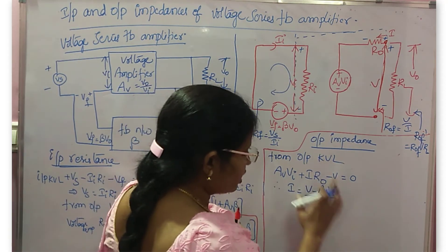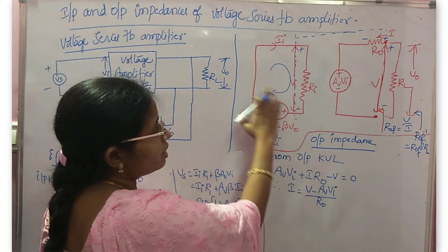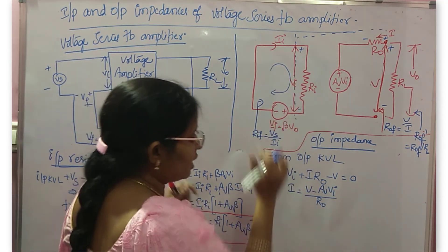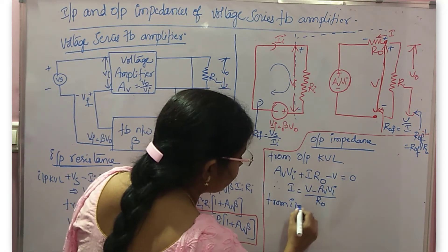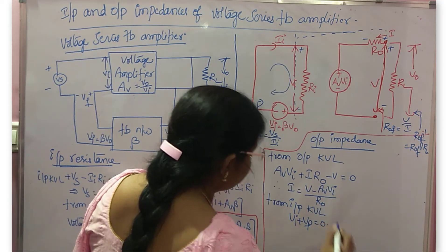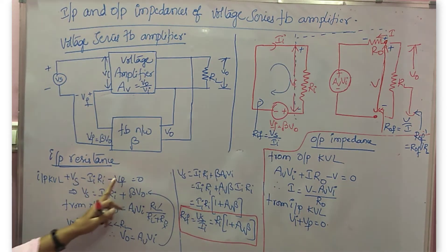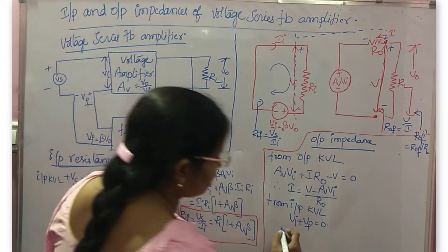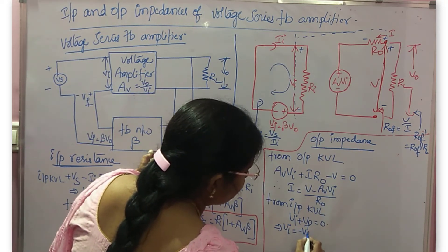Now you must remove Vi. Go to the input circuit — we shorted Vs, so we have only two voltages, Vi and VF. From the input: Vi plus VF equals 0. Since Vs equals Vi plus VF and Vs is 0, Vi plus VF equals 0, which implies Vi equals minus VF.